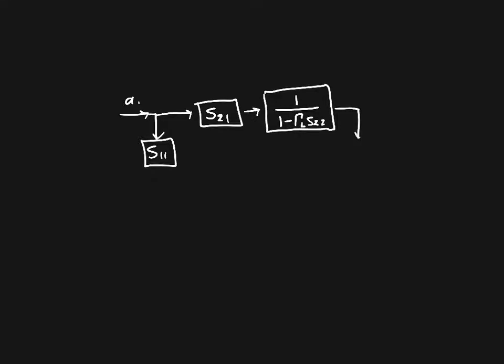We've got another block, gamma L, and we've got another block, S12. And then over here, we've got a summing junction and B1.